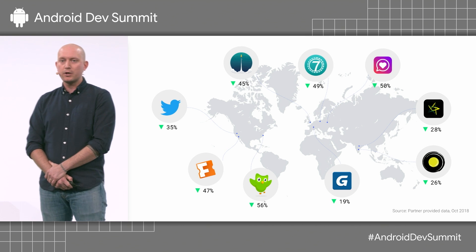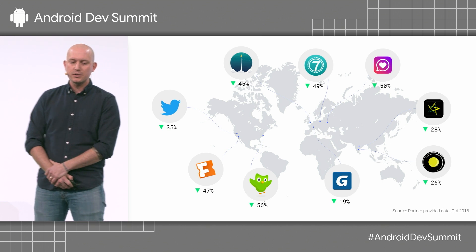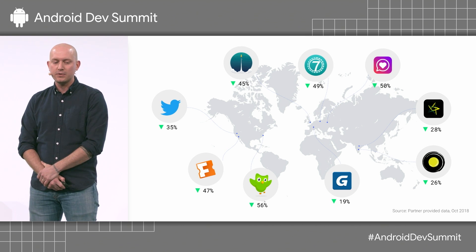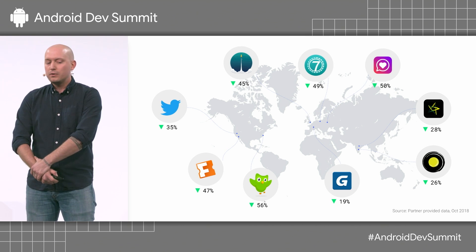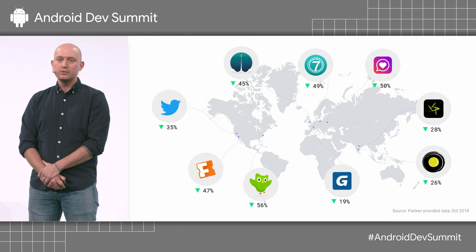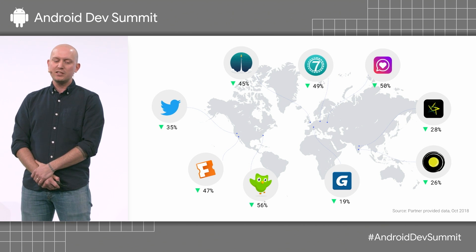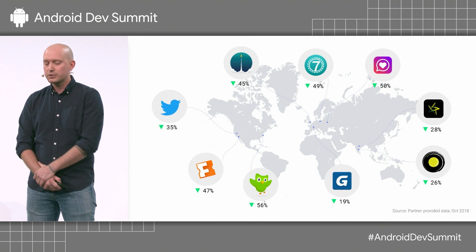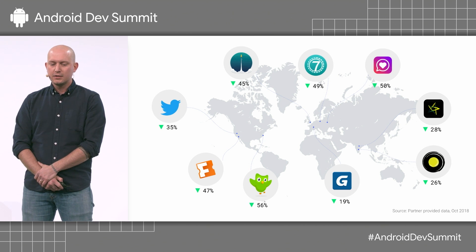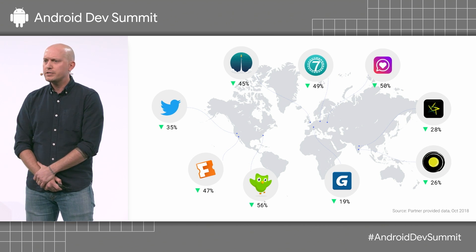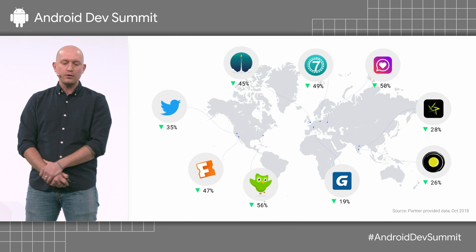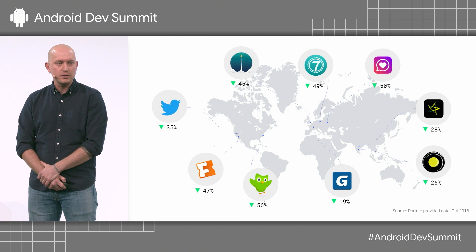All these developers around the world have switched and are seeing fantastic size savings. Duolingo, for example, saw a 56% size saving compared to a universal APK. And it's really hard to get such big savings from incremental optimizations.